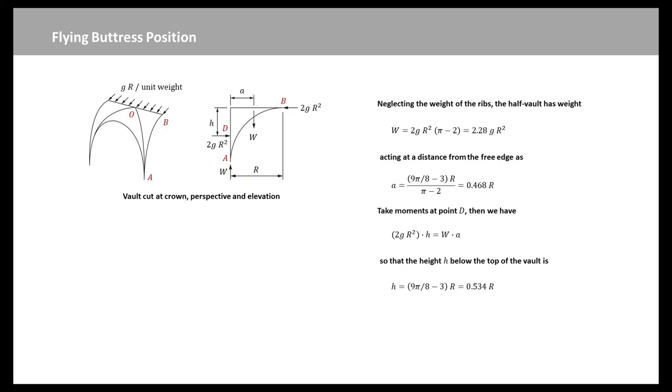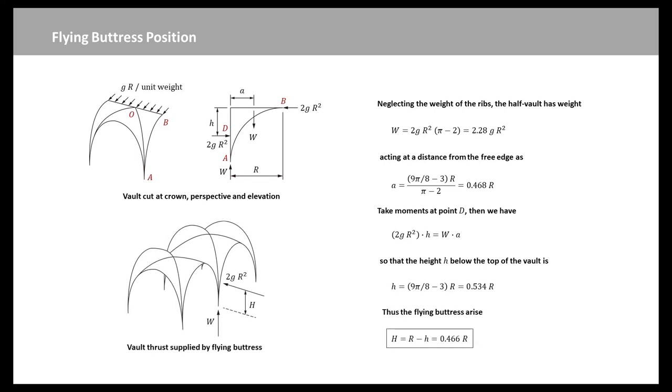Take moments at point D. Then we can obtain h equals 0.534 times R. From where does this horizontal force arise? This figure shows two bays. It will be seen that there is no problem in the longitudinal direction. Each shell will lean against the next with required force. In order to stabilize the vault, an external force must be provided in the transverse direction. This force is the vault thrust to be concentrated by the flying buttresses.